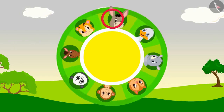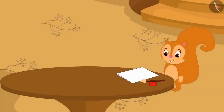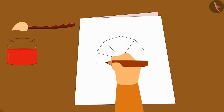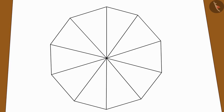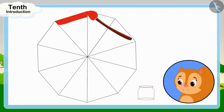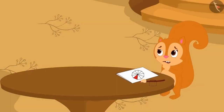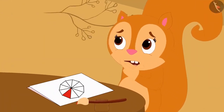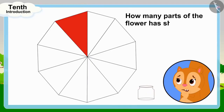In this video, we will learn about what is a tenth. Chanda is making a greeting card for Babban. She has drawn a flower on paper using 10 similar triangles. She started coloring the petals of the flower with red color. But she has only painted one petal so far and the color is over. Chanda thought nervously, wondering how many parts of the flower she has colored.